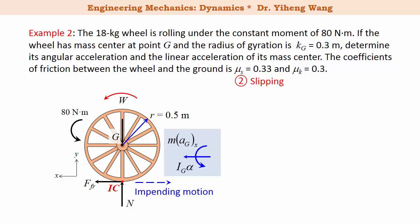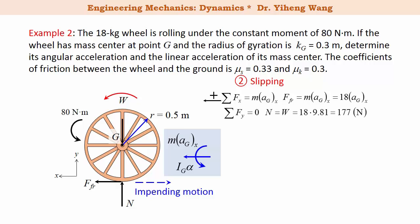Now let's do the calculation again, knowing that slipping does occur. The free body diagram and the kinetic diagram look the same as in the previous step, with one exception: the contacting point between the wheel and the ground is no longer the instantaneous center of zero velocity, because since the wheel is slipping, it no longer has a linear velocity of zero at that point. Now let's write our equations of motion. The first and second equations are the same as earlier, but for the third equation, we cannot summarize the resultant moment about the instantaneous center of zero velocity anymore, since we do not know where that is. So we use the general equation: the resultant moment about point G equals to IG alpha. Now we have not only the 80 newton meter couple moment, but the frictional force also has a moment about point G. IG is calculated through the radius of gyration again.